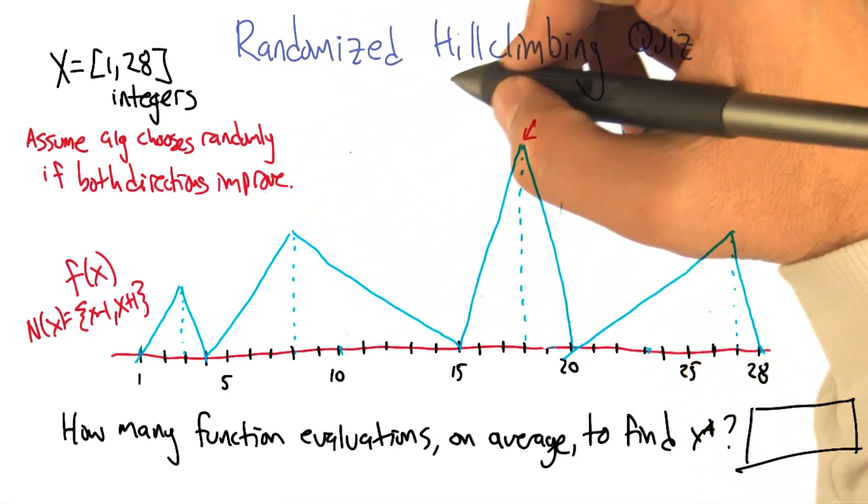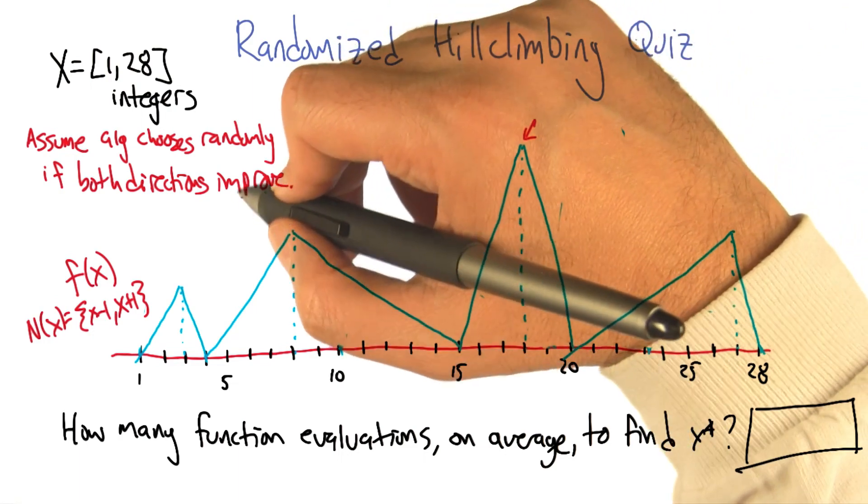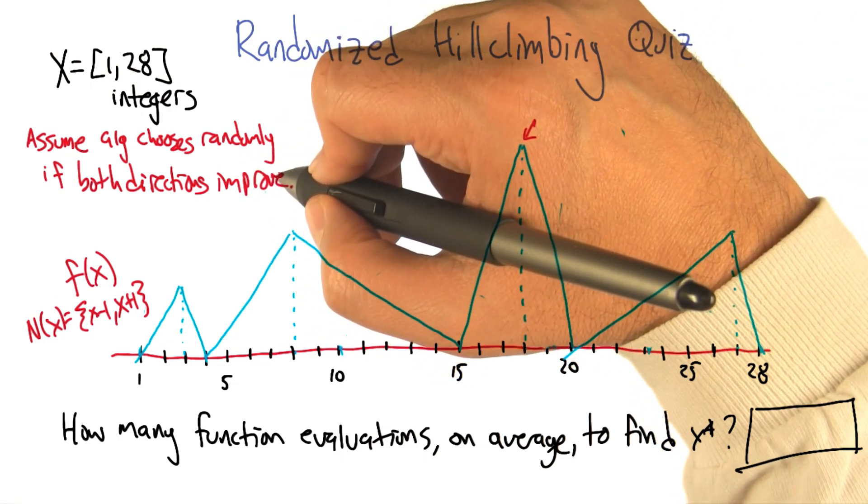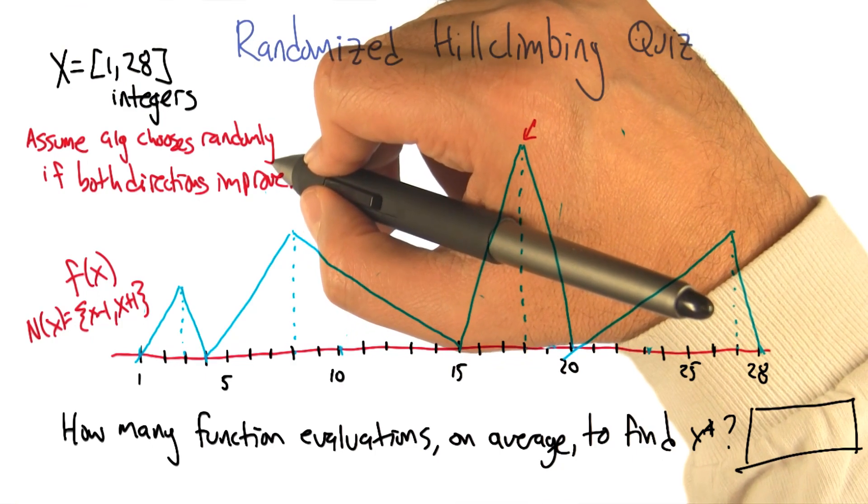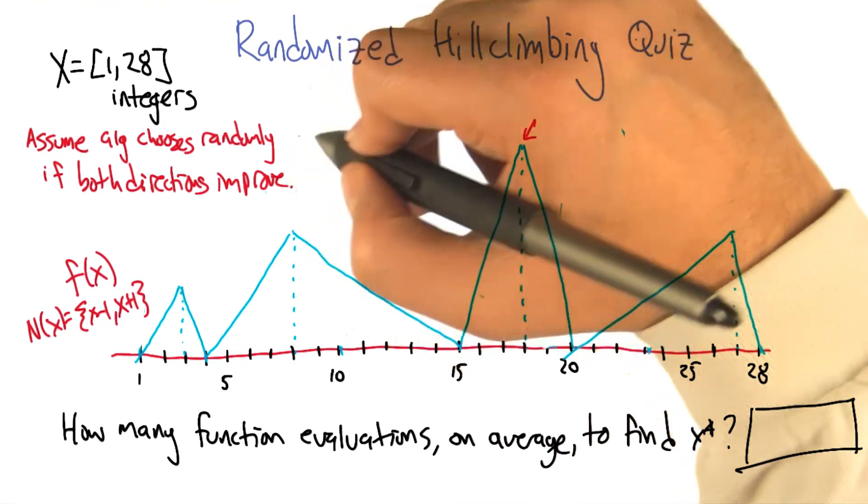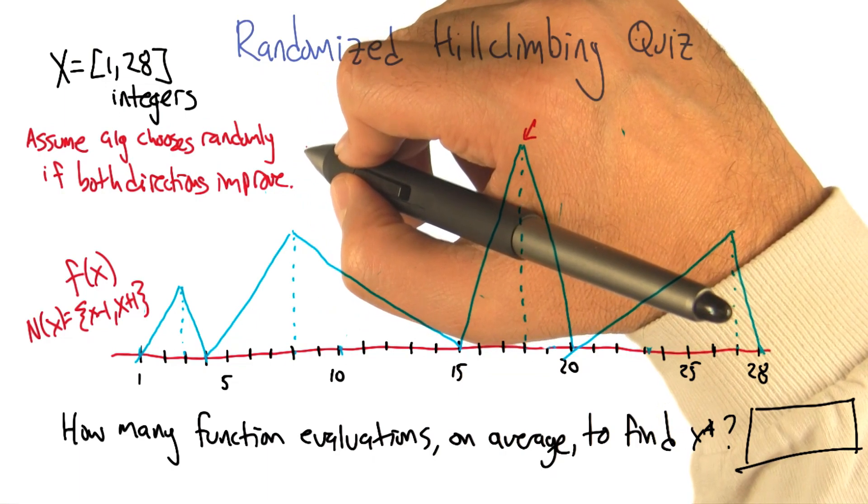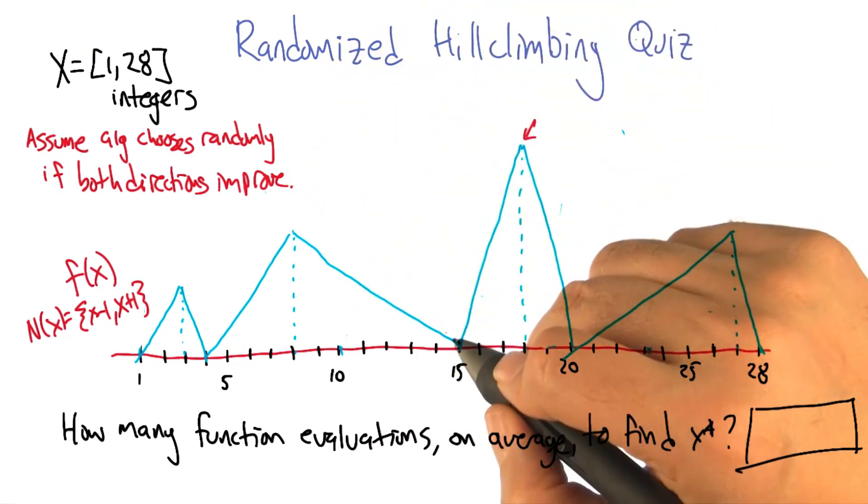So we're using a simplification of the hill climbing we had before. It's going to check the neighbors, check both neighbors if there are two of them. If one of them is an improvement, it goes in that direction. If neither is an improvement, it declares itself at a local optimum. If both are an improvement, it flips a coin to decide where to go.